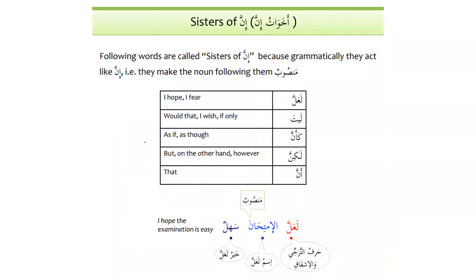Inna has sisters called akhawatu inna. Inna is a particle — a kalima — and all kalimas in Arabic are feminine, hence 'sisters.' There are five sisters total. We have la'alla, which has two meanings: 'I hope' or 'I fear.' In today's lesson we focus on inna and la'alla. The other four sisters — layta, ka'anna, lakinna, and anna — we will learn in following lessons.